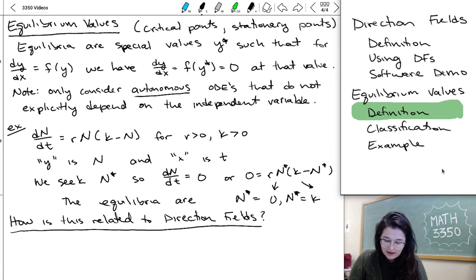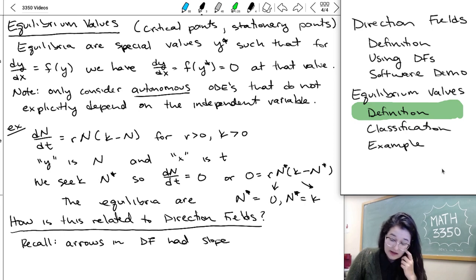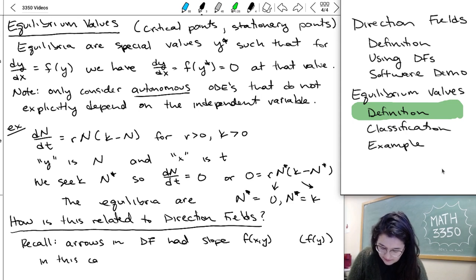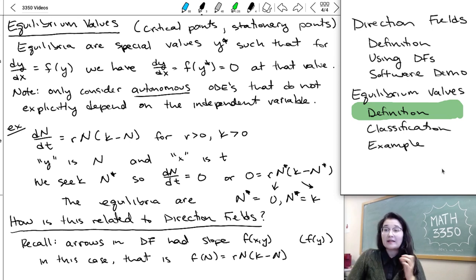And so I'd like you to sort of recall that the direction field arrows had slope given by f(x,y), the right hand side of the differential equation, or in this case, it would only be f(y) for the type of differential equation we're talking about right now, because there's no x allowed on that side. So for example, that's going to be f(n) is equal to rn times (k minus n). That's the thing that we would plug in to get the slope of the arrows in the direction field.